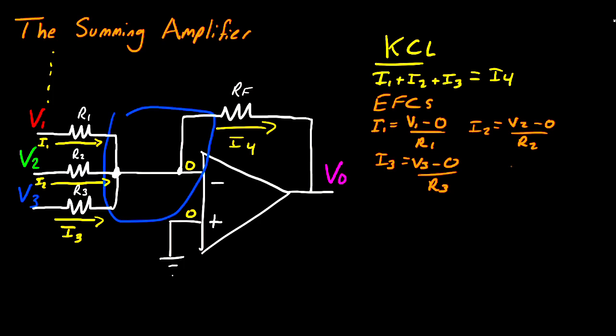And lastly, we have RF, and that's going to be I4 is equal to zero minus Vout divided by RF. At this point, we now have all the equations we need. So what I'm going to do is solve for VO in terms of the resistances and input voltages that we have.